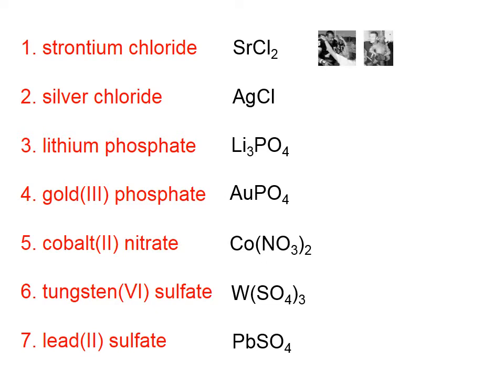Number one: SrCl₂. Chloride ion compounds are soluble unless paired with Hg₂²⁺, Ag⁺, or Pb²⁺. Sr²⁺ is none of those, so this substance is soluble — aqueous.